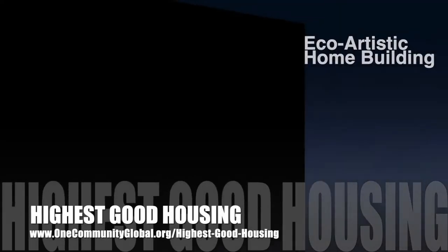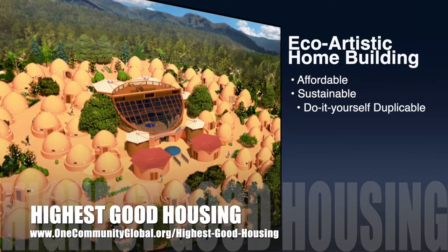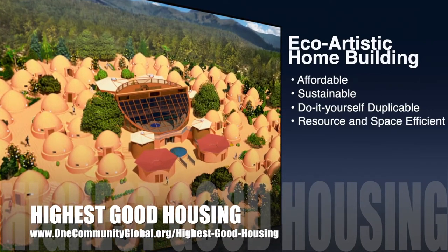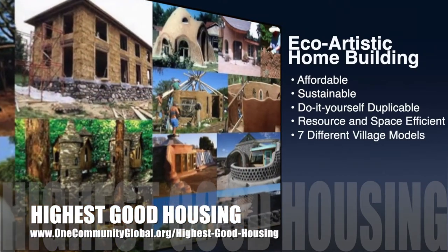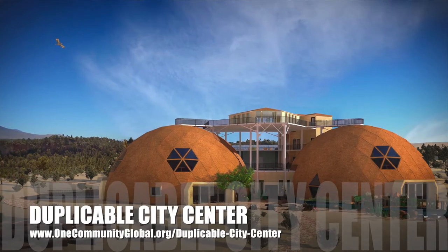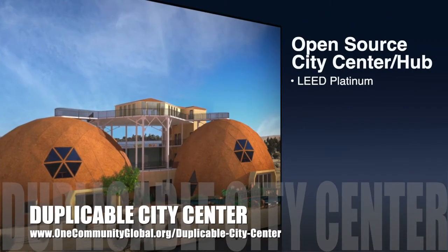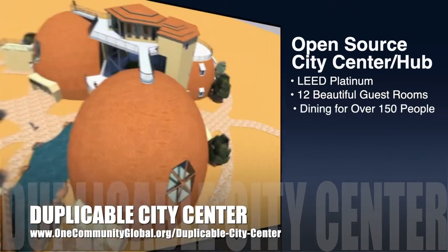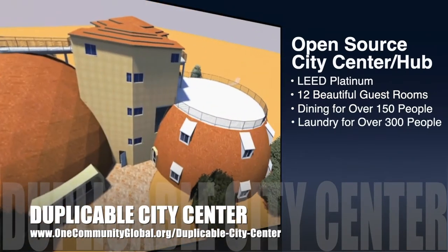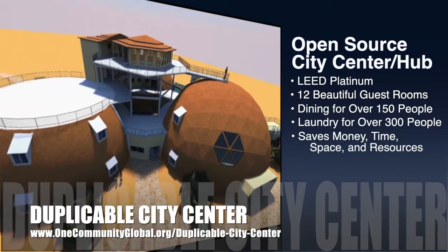The One Community approach to highest good housing is eco-artistic home building that is affordable, sustainable, do-it-yourself duplicable, resource and space efficient, and consists of seven different sustainably constructed village models. One Community is also creating an open-source duplicable city center designed to be LEED Platinum certified, provide 12 guest rooms, dining for over 150 people, and laundry and recreation space for over 300 people — all while saving money, time, space, and resources.